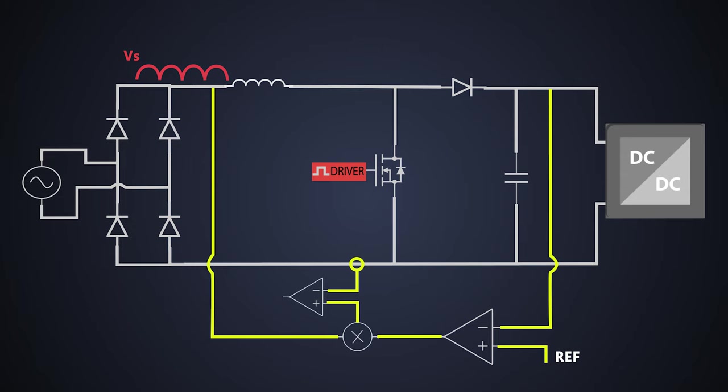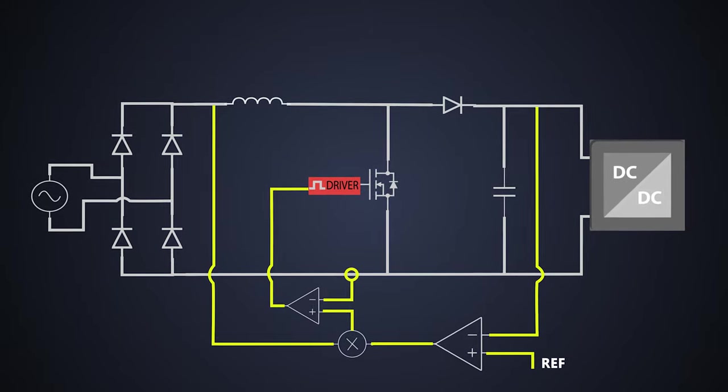Then this comparator takes the decision to provide the pulse to this MOSFET and by controlling the switching of this MOSFET, it supplies the required voltage to the DC to DC converter and controls the behavior of the circuit current. This process repeats in cycle and this is how the classic power factor correction method works.